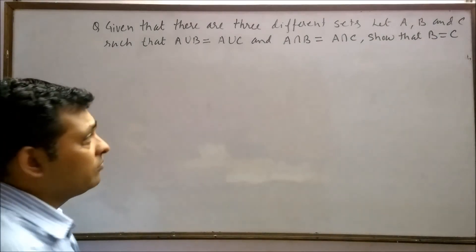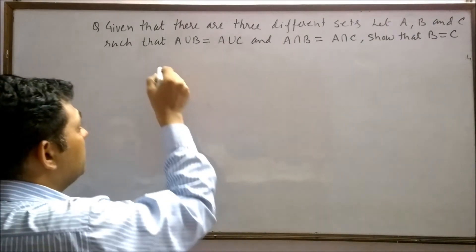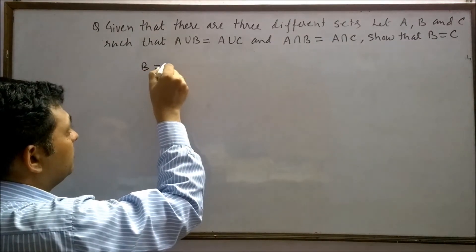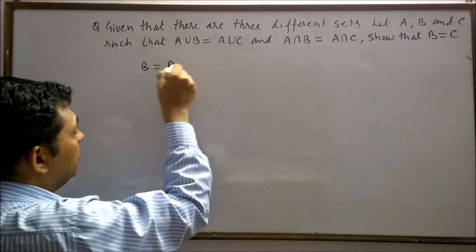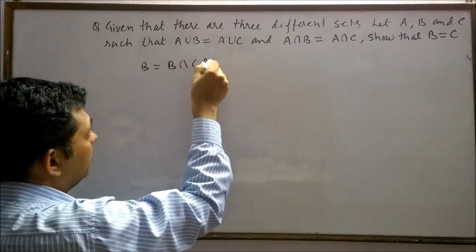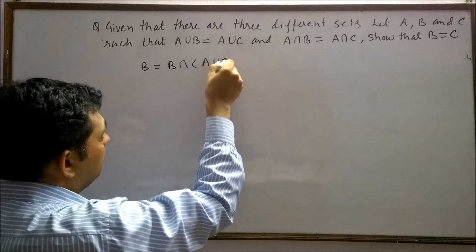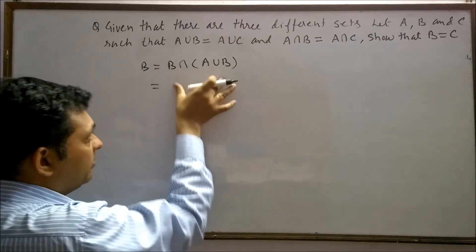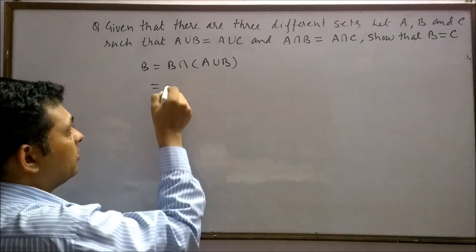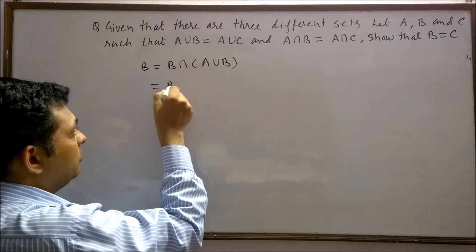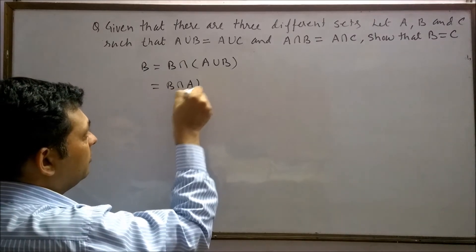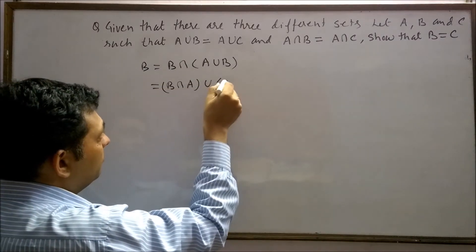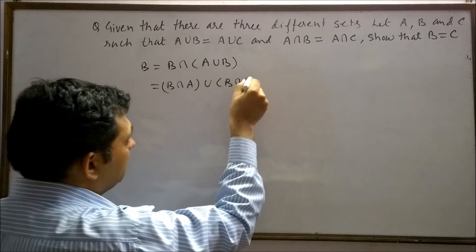Let's try to solve it. Set B can be written as B intersection (A union B). Now, by applying the distributive property, this becomes B intersection A, union B intersection B.